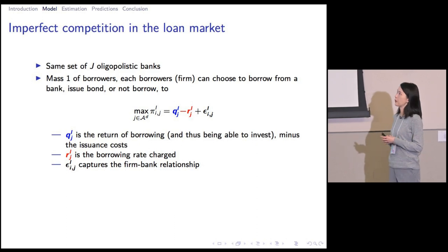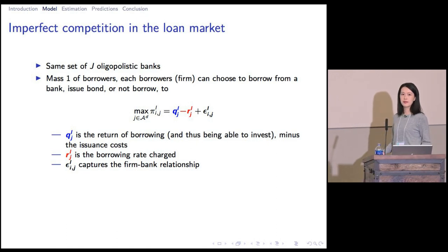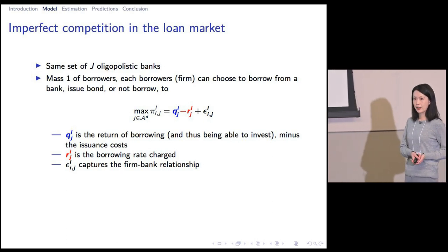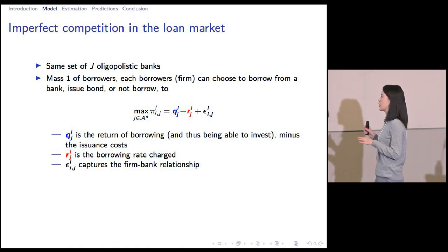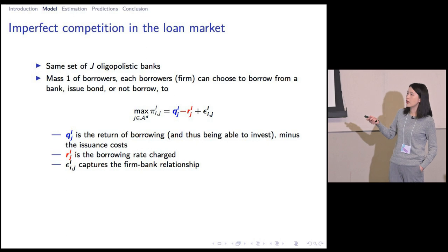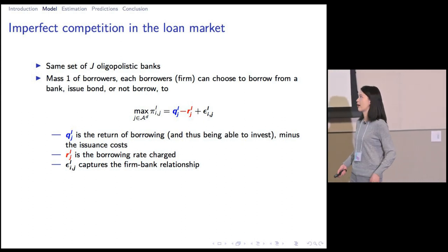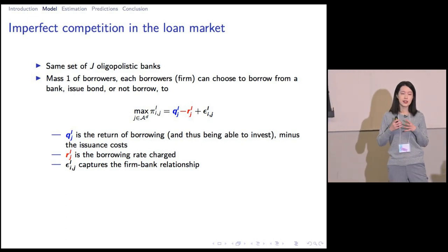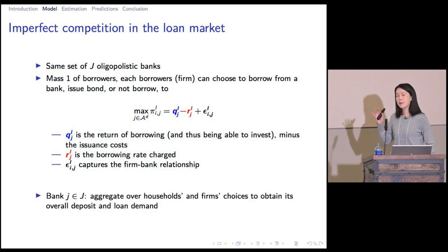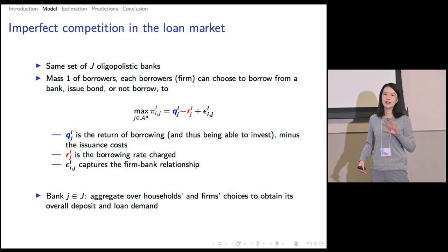We model the lending market in a symmetric way, where the same set of J banks compete for borrowers. For each borrower, again there are J plus two options: take a loan from one of the J banks, directly float corporate bonds, or not make any investment at all. The firm chooses among these J plus two discrete choices to maximize their profit from the lending market, which equals the return from borrowing that allows investment, minus any flotation cost for corporate bonds, minus the borrowing rate charged. On the lending market, we again introduce epsilon, a match-specific preference shock, to capture any firm-bank specific lending relationship. From the bank's perspective, it aggregates over households' and firms' choices to obtain its overall deposit demand and loan demand.